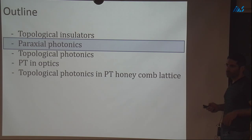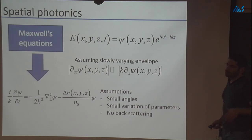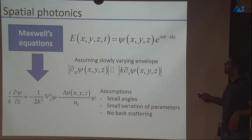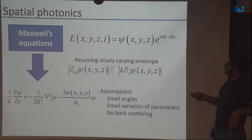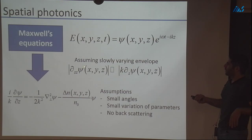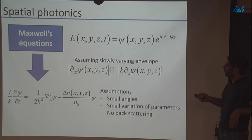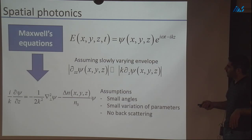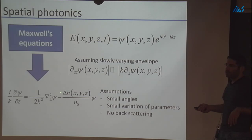Now our toolbox: to implement these ideas in photonics, we use paraxial or spatial photonics — the paraxial approximation. We start with Maxwell's equations and assume a slowly varying envelope, where the spatial derivative is much less than the wavelength. This gives us the equation for the envelope — our paraxial approximation. You can already see that it has the same structure as the Schrödinger equation.